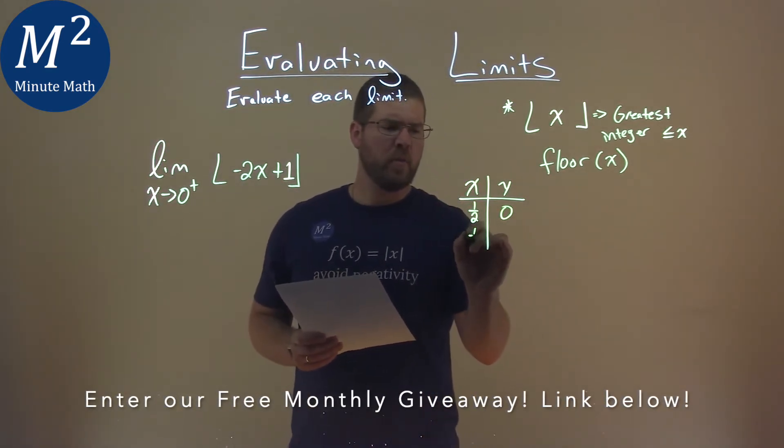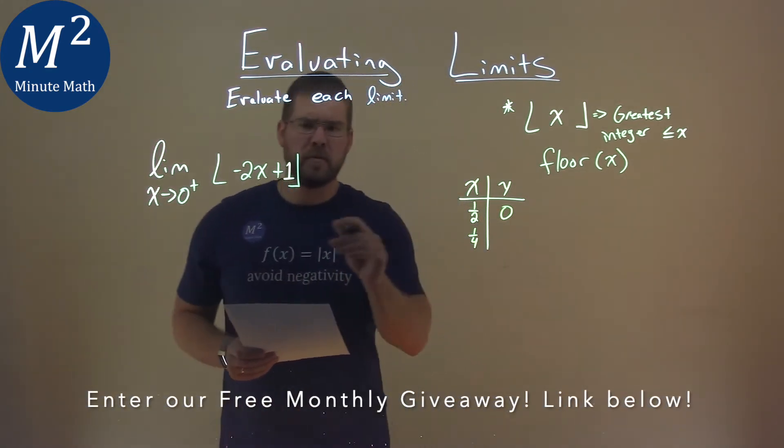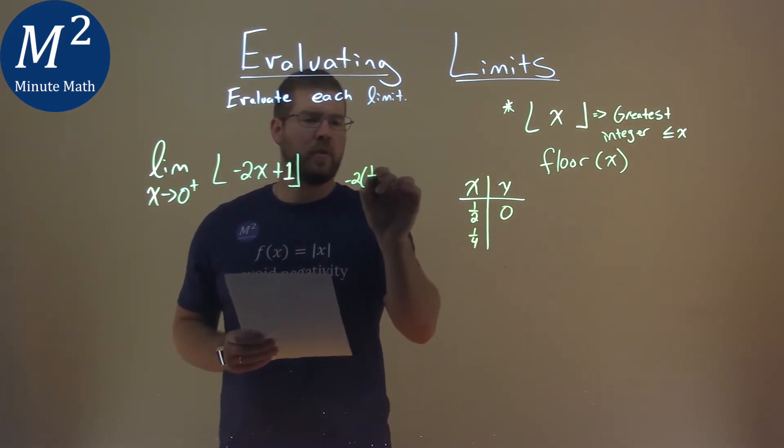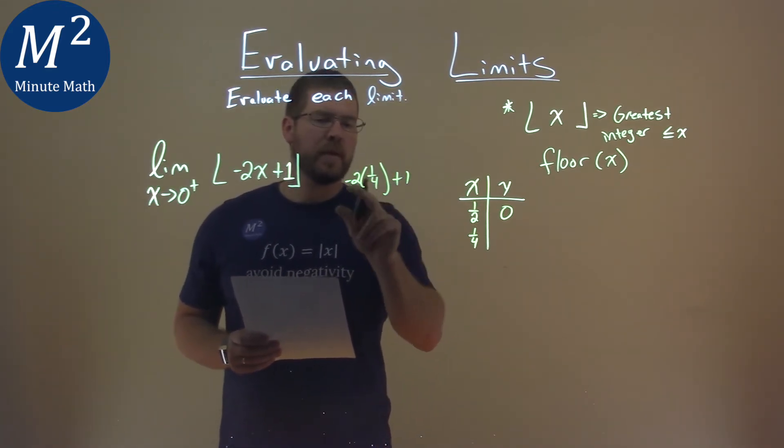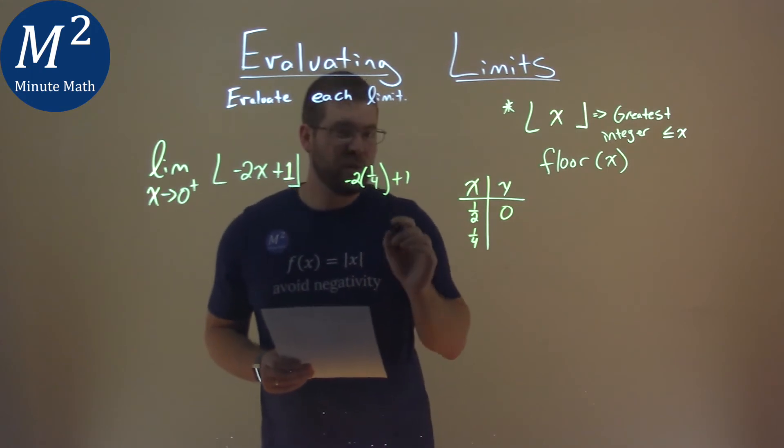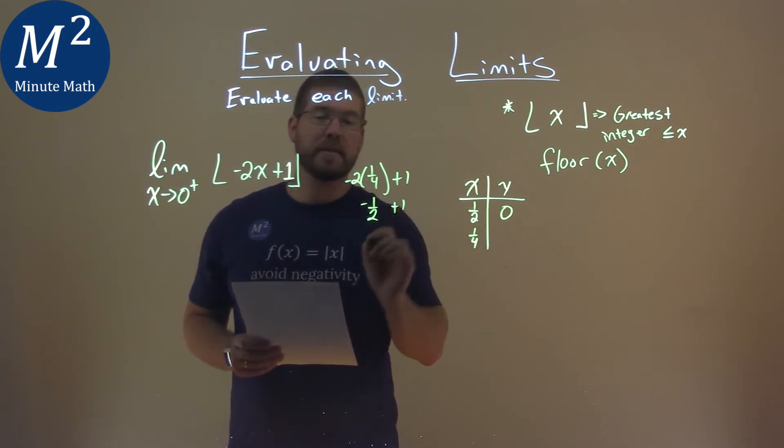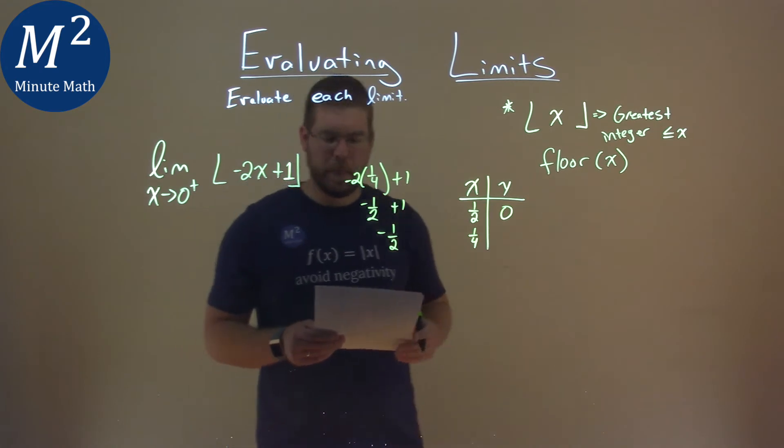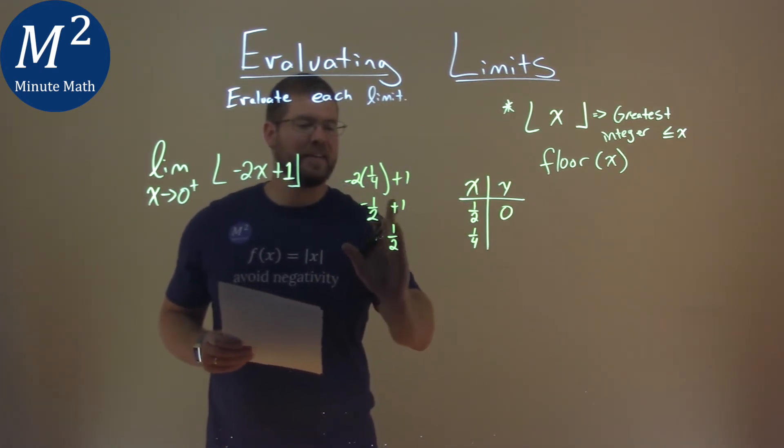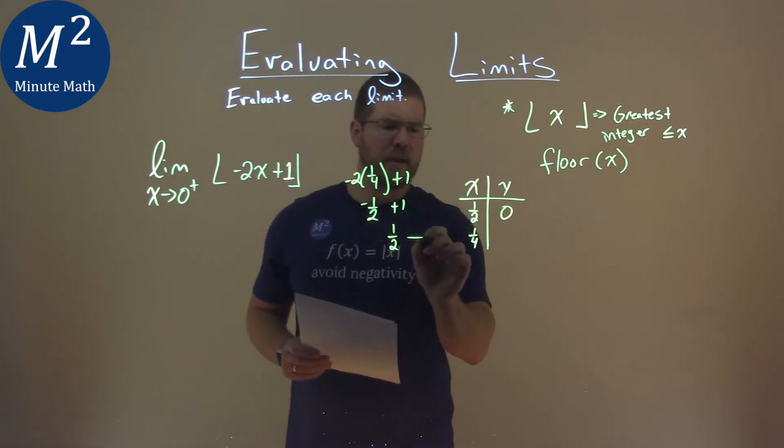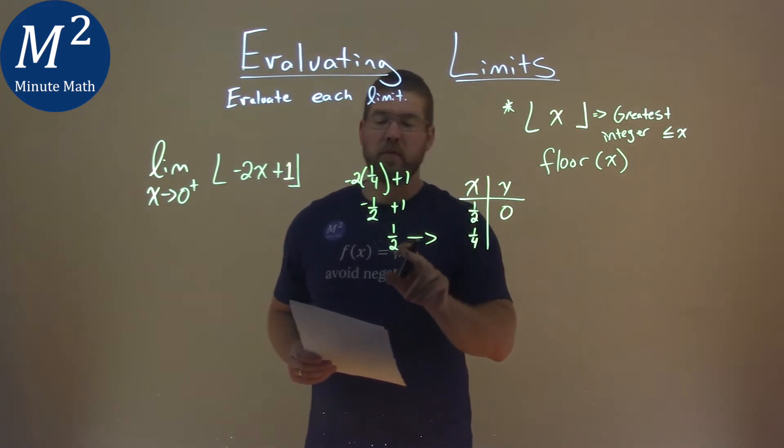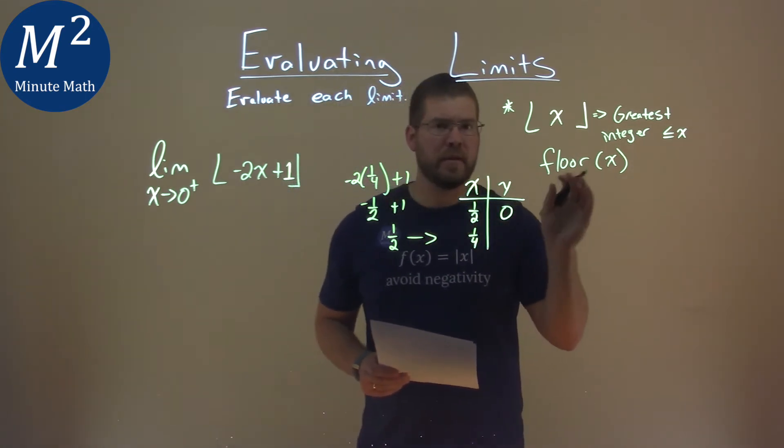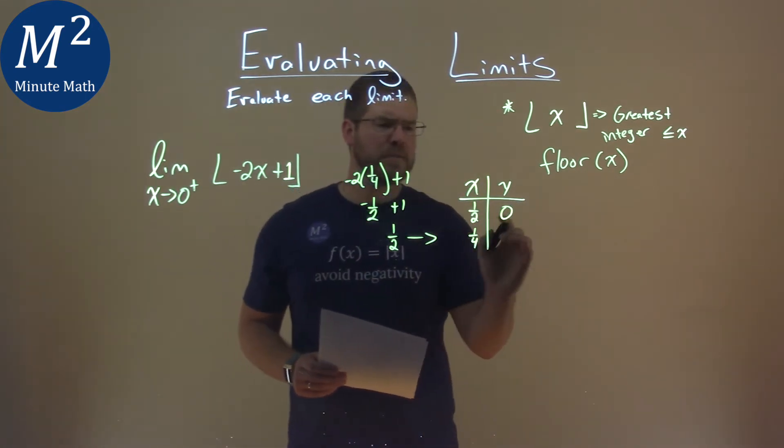Well, what happens is let's go a little smaller, a one-fourth here. So let's do some work here. If we have a one-fourth, so negative two times a one-fourth plus one, negative two times a one-fourth is a negative one-half, and then we add one to that. Negative one-half plus one here, right, is a negative one-half. That's a positive one-half. Positive one-half, I'm going to throw it off here. All right, but I'm not going to plug just one-half in there. We're taking the floor of that output, the greatest integer less than or equal to that one-half, which is zero.